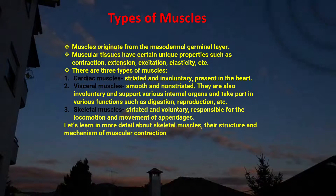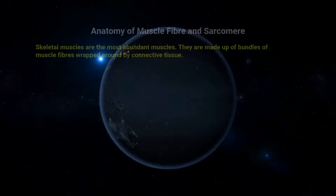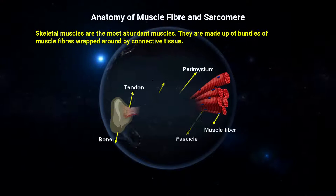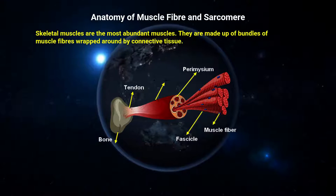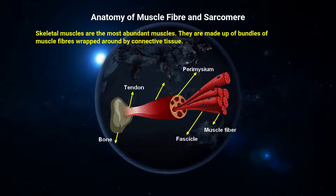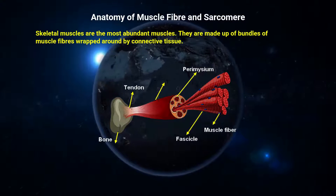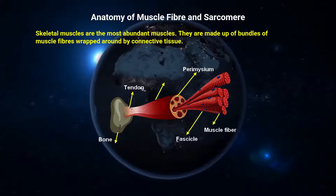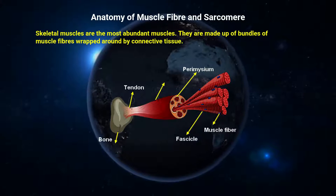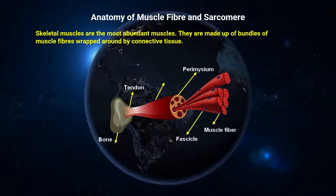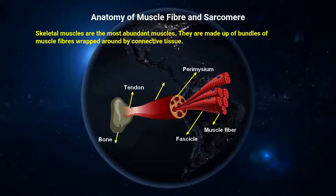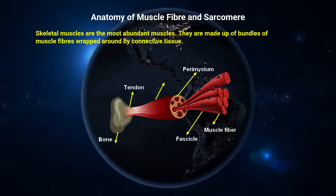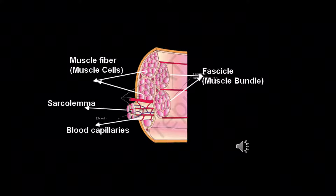Let's learn in more detail about skeletal muscles — their structure and the mechanism of muscular contraction. Each organized skeletal muscle is made of a number of muscle bundles or fascicles, held together by a common collagenous connective tissue layer called fascia. Each muscle is enclosed by perimysium and attached to the bone by tendons.